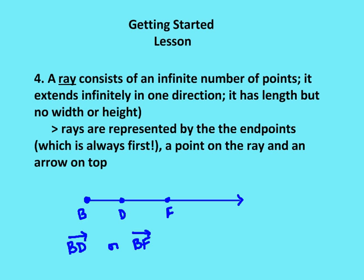A ray consists of an infinite number of points, just like a line. It extends indefinitely, however, just in one direction. It has length, but no width or height. Rays are represented by the endpoints, which are always going to be first, and then a point on the ray and an arrow on top.